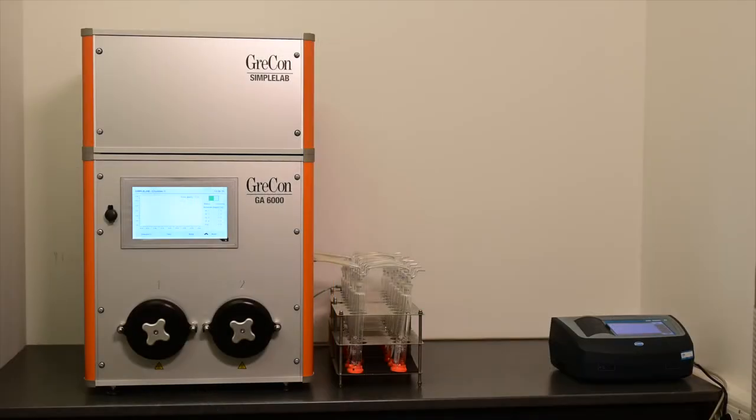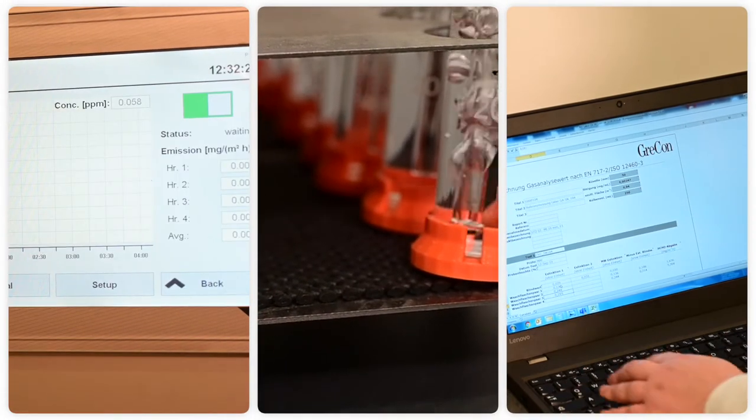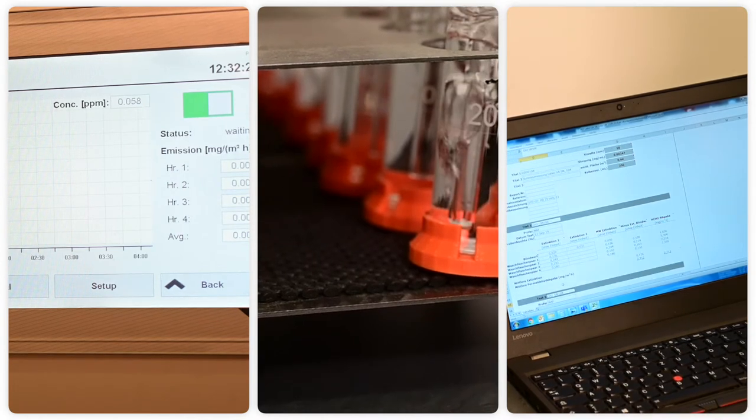What is the GA-6000? The GA-6000 is a testing device for determining the formaldehyde emission from wood-based materials according to DIN EN ISO 12460-3.